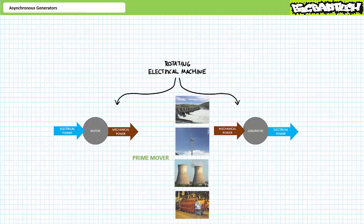Some external mechanical power source known as a prime mover — like falling water, blowing wind, expanding steam, or an internal combustion engine — drives the shaft of a generator with given torque and rotational speed, and electrical power comes out.